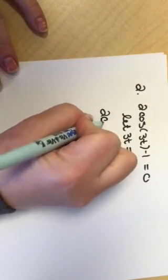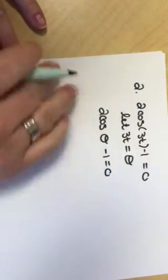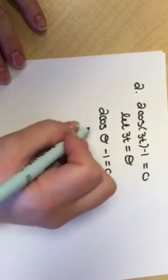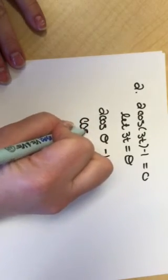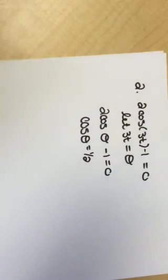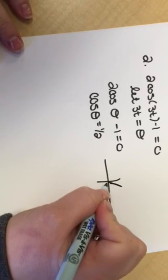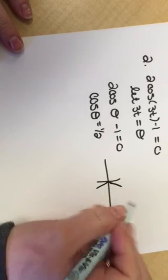So, 2 cosine of theta minus 1 equals 0. I'm going to add my 1 over and divide by 2, so now I'm going to have cosine of theta equals 1 half. You know where cosine equals 1 half. That's something off the unit circle. It happens up here, and it happens right here.